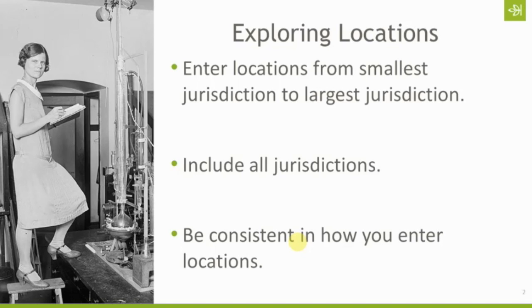Which brings us to the next piece of advice: be consistent in how you enter your locations. There are two schools of thought in genealogy, and both have some validity. One is that in the location field, you record the location as it was at the time the event occurred — when the person was born or died there, what was that place called? And then in a notes or descriptive field you put further information about what that place is called today.